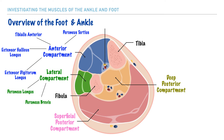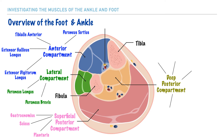Moving on to the superficial posterior compartment, we have the gastrocnemius, soleus, and the plantaris. And last, but certainly not least, we have the deep posterior compartment, which includes the flexor digitorum longus, the popliteus, the tibialis posterior, and the flexor hallucis longus.